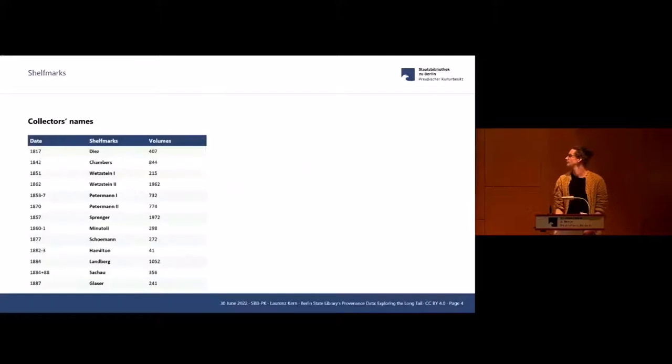Shelf marks, very quickly. The more prominent parts of our holdings when it comes to provenance data are these collections that are named after the collectors from whom the library acquired the items. So Diez, Wetzstein, Petermann, Sprenger are the most famous names in the field of Middle Eastern manuscripts. This is already a first step into looking at the provenance.